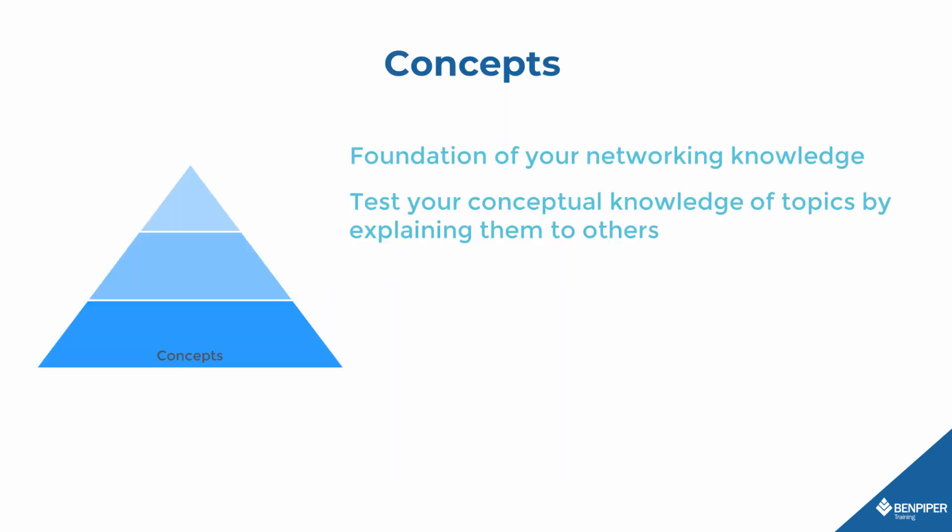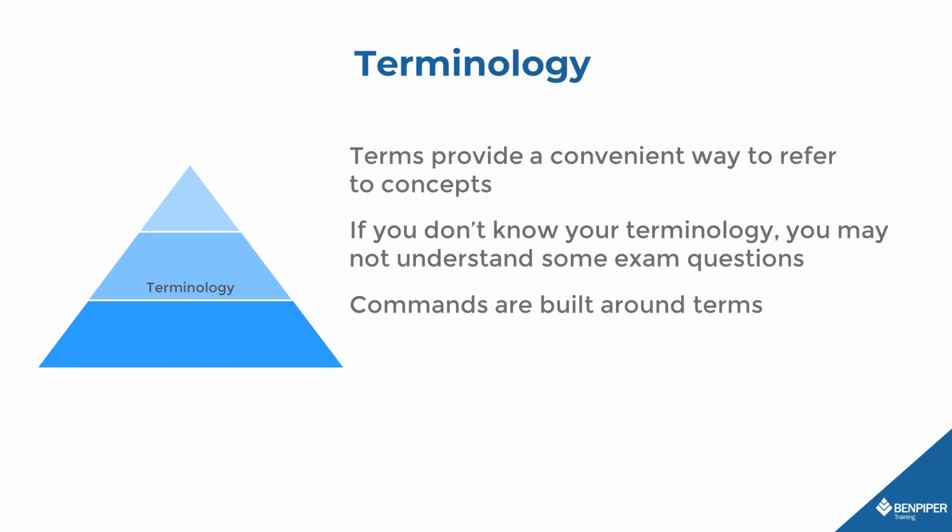Let's talk about why the order of the triad is so important. Concepts are the foundation of your networking knowledge. The way you know you have a good conceptual knowledge of a topic — say spanning tree, for example — is to explain a spanning tree topology to yourself or someone else. Be able to draw and label diagrams and explain intricate details, such as why bridge priorities are in increments of 4096. Once you have the concepts down, start learning the terminology. A big mistake is to start memorizing terms without having a clue about the concepts the terms describe. Terms without concepts are meaningless. The whole point of technical terminology is to provide a convenient way to refer to concepts, and they are what allow exam questions to be three sentences long rather than three paragraphs long.